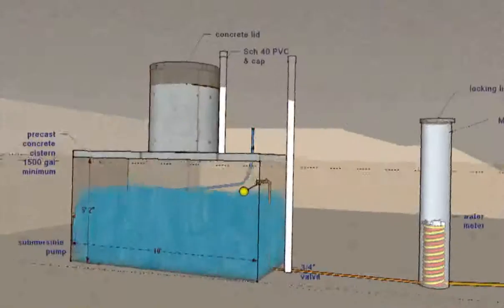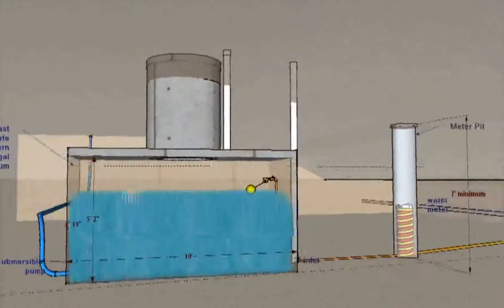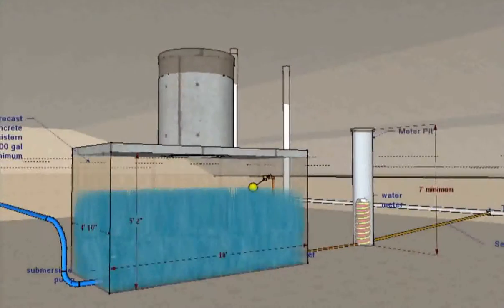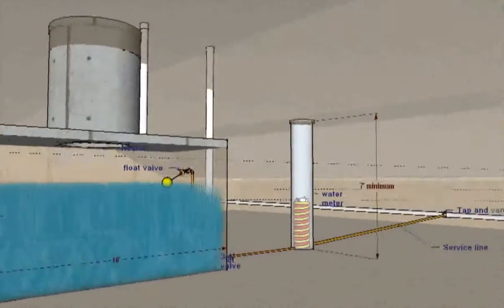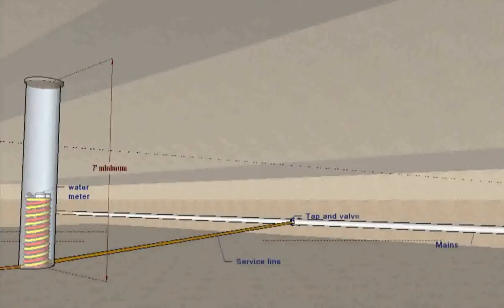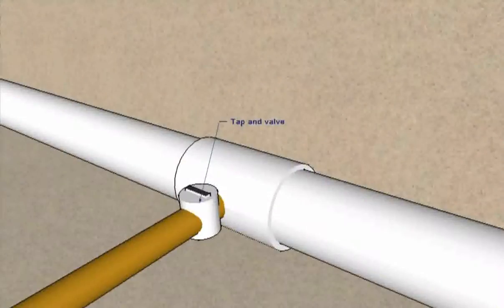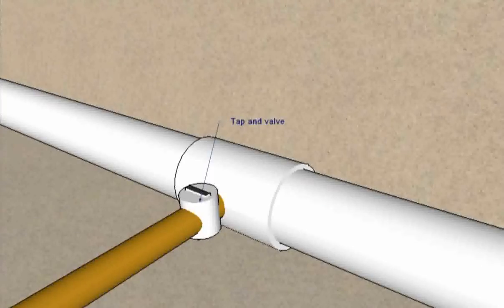A typical Mountain Mutual customer has a 1500-gallon precast concrete cistern in the shape of a large box. The cistern is fed by a service line that taps into a Mountain Mutual water main. The property owner is responsible for any repairs from the tap to and inside the building structure.